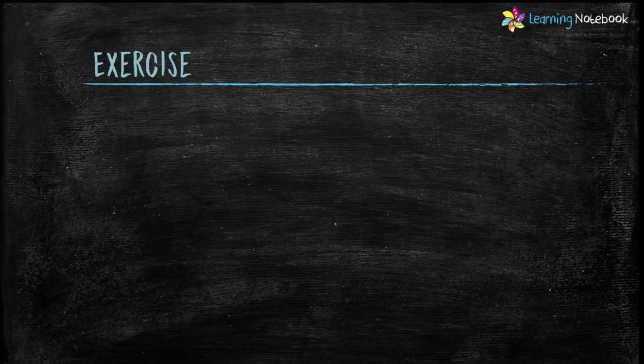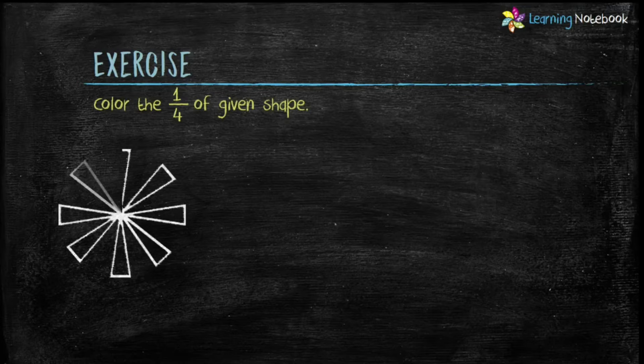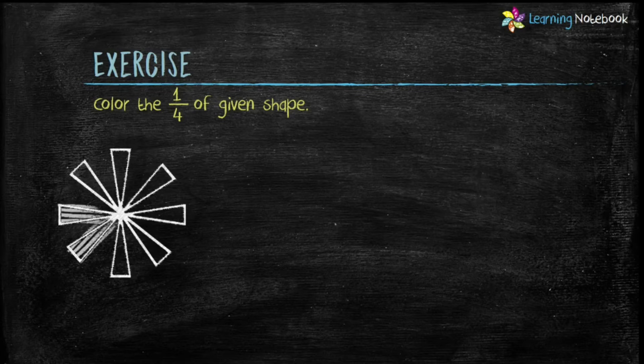Next question is: color one-fourth of the given figure. Let's take a look at the first shape. This shape has 8 parts, and we have to color one-fourth of this shape. So divide 8 by 4, which is equal to 2. Therefore, color 2 parts of this figure.